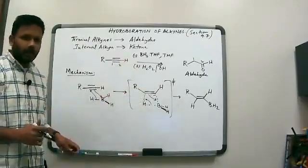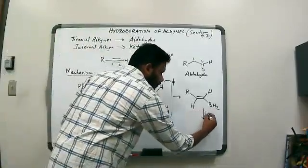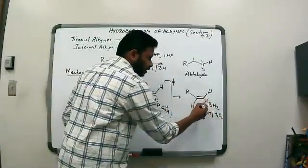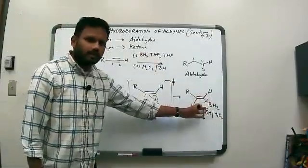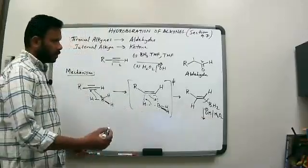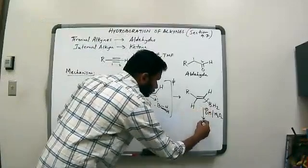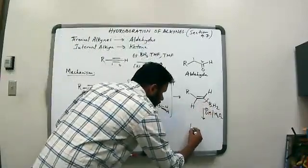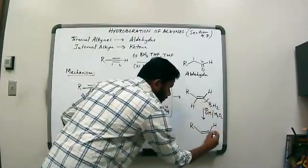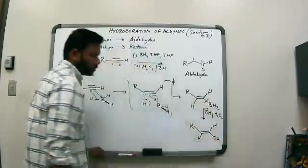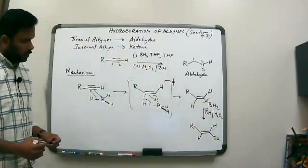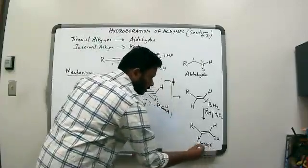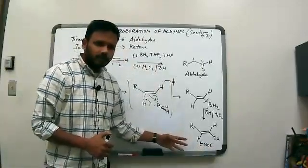So hydrogen goes to the more substituted carbon, BH2 to the less substituted — very similar to what we saw in alkene hydroboration. From here, when we do the oxidation step with base and hydrogen peroxide, the BH2 group is replaced by a hydroxyl group. So eventually it gets replaced by a hydroxyl group, and notice what we've made: this is an enol, because it's an alkene with an alcohol.